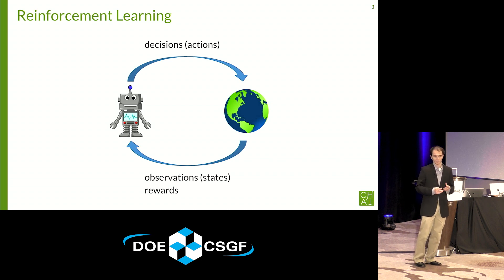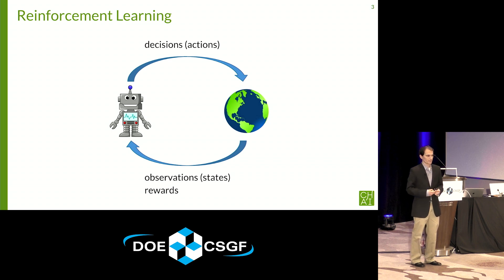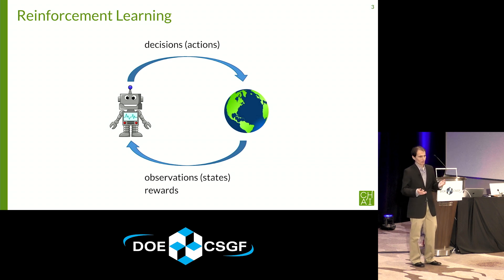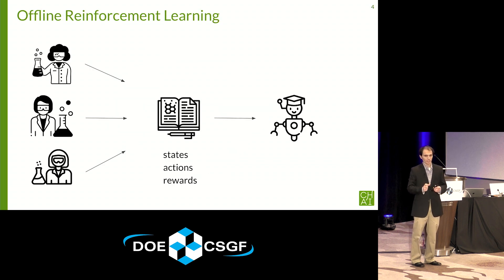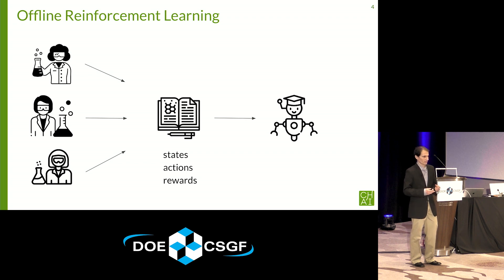Reinforcement learning is a general framework for decision making. It consists of an agent that takes actions in the environment and then receives feedback in the form of observations or states, as well as rewards. This lets the agent learn, purely from interaction, how the environment works, as well as which outcomes are desirable and undesirable. Often the RL agent is like a newborn baby that learns everything from scratch. We focus on an additional constraint known as offline reinforcement learning, where the agent is not allowed to interact with the environment directly.